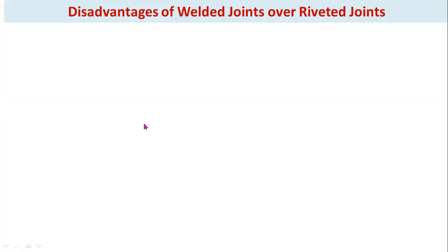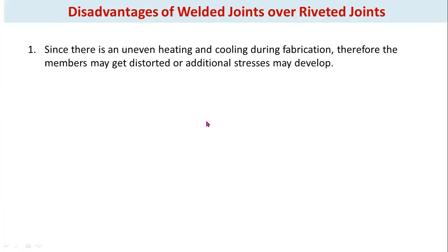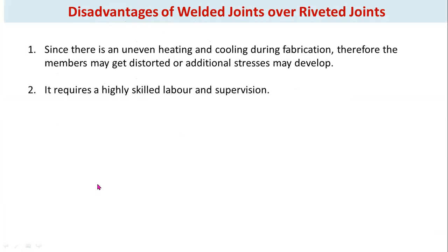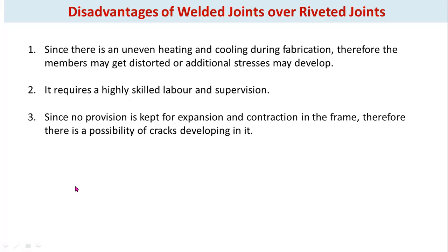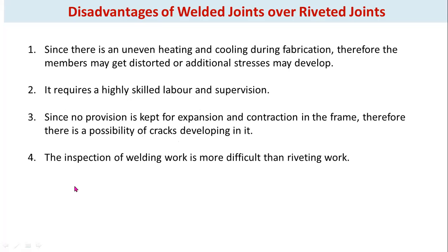Disadvantages of welded joints: Due to uneven heating and cooling during fabrication, members may get distorted or additional stresses may develop. It requires highly skilled labor and supervision. Since no provision is kept for expansion and contraction in the frame, there is a possibility of cracks developing. The inspection of welding work is more difficult than riveting work.